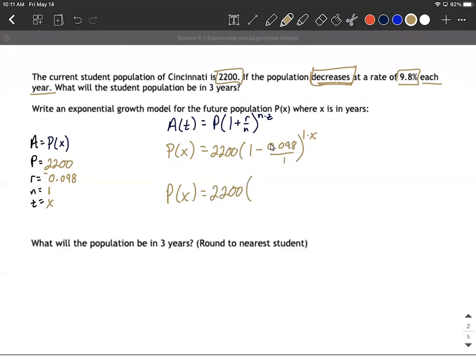you're just going to be left with this number. One minus 0.098 is going to be 0.902. And then that's raised to the one times X, or just X power. So here's our function that models this situation.